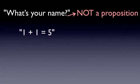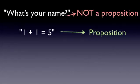The statement one plus one equals five is a proposition because this is a statement that is either true or false. Now notice that even though the statement is actually false, it's still a proposition. It doesn't matter if the statement is actually true or false. All that matters is that the statement can be evaluated to be either true or false.